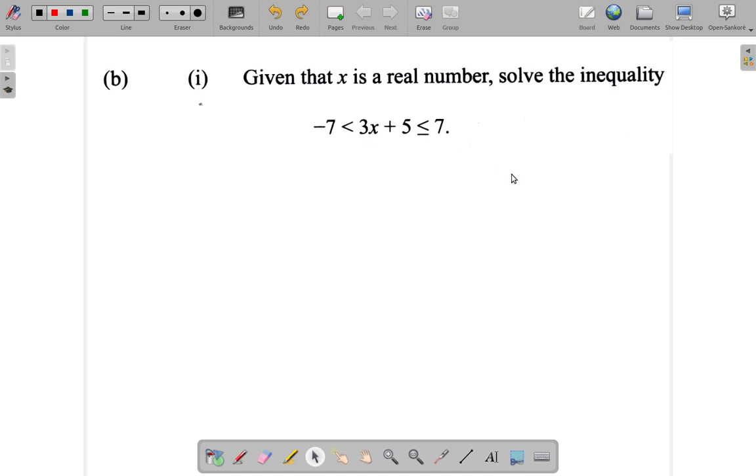Let's see what this is about. Negative 7 is less than 3x plus 5, and that is less than or equal to 7.